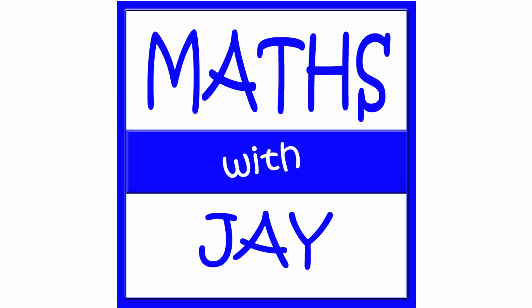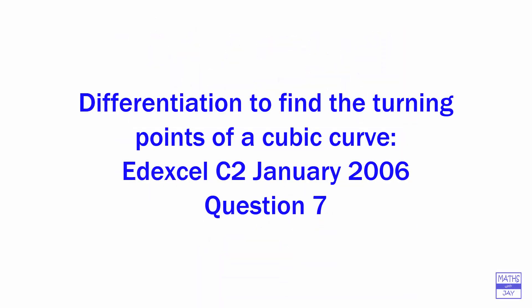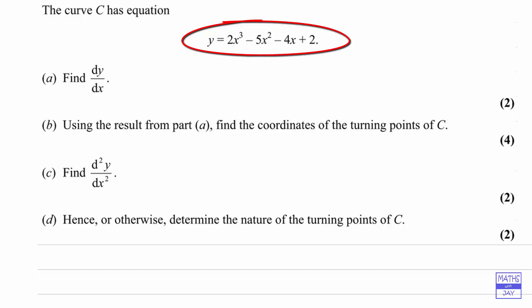Hello! Welcome to Maths with Jay. All four parts of this question are about the curve C. We need to find the coordinates of the turning points of the curve, and in part D we're going to determine the nature of the turning points.